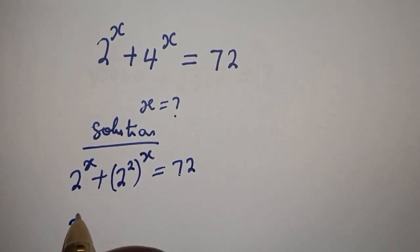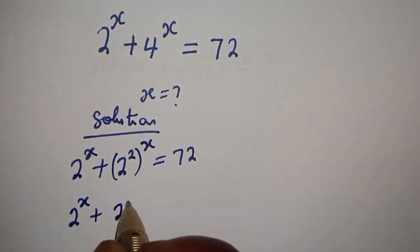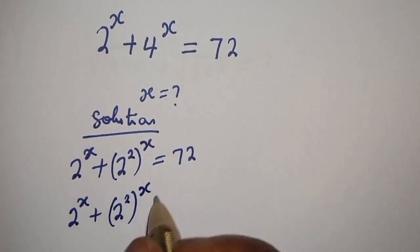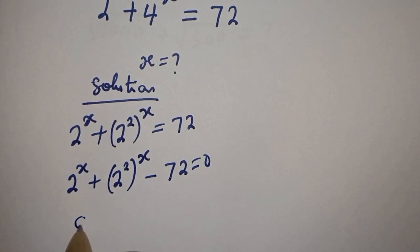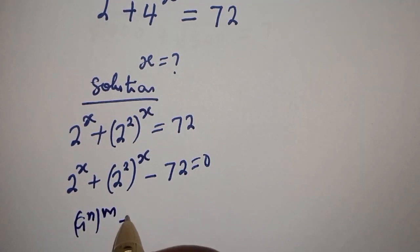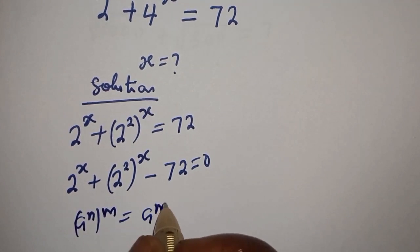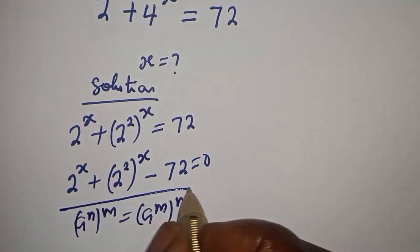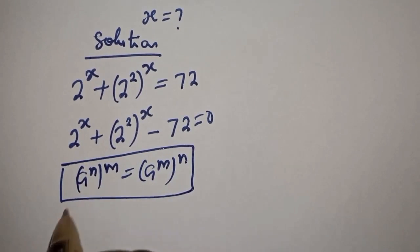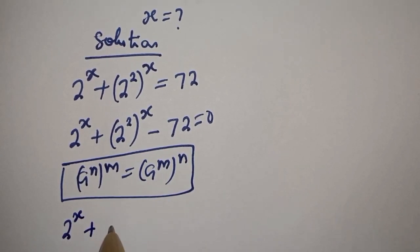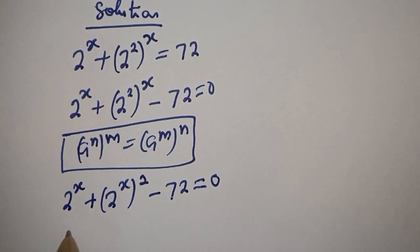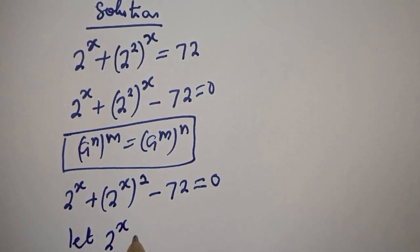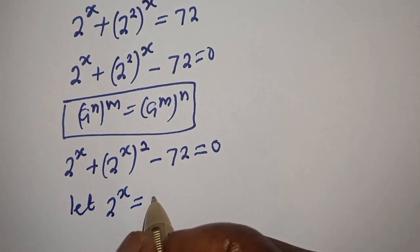Then 2 raised to power S plus 2 squared raised to power S minus 72 is equal to 0. Note that A raised to power N, to the power of M, is equal to A raised to power M to the power of N. So this becomes 2 raised to power S plus 2 raised to power S, squared, minus 72 is equal to 0. So let 2 raised to power S equal T.